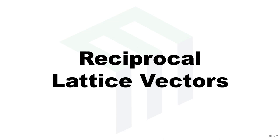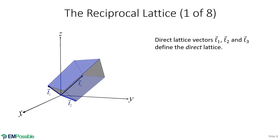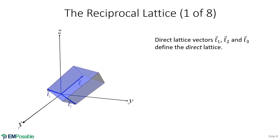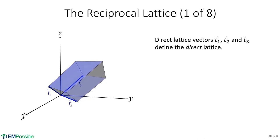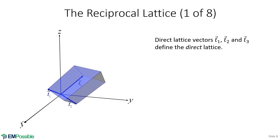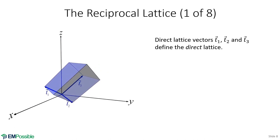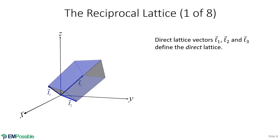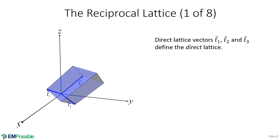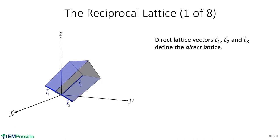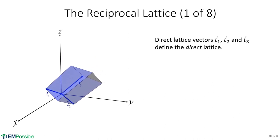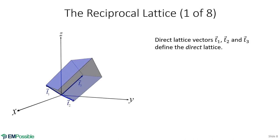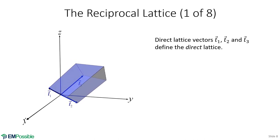Now let's talk about reciprocal lattice vectors and the reciprocal lattice. The direct lattice is the real, physical thing we can touch and build. In three dimensions, we describe it with three primitive translation vectors T1, T2, and T3. These vectors enclose a parallelepiped — a unit cell — that we can stack with no voids or overlaps to construct the entire lattice.